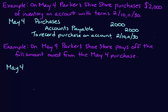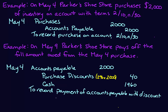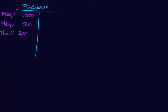When we pay off the purchase on May 9th, we assess whether we're within the 10-day discount period — and yes, we are, so we can take advantage of the 2% discount. The journal entry starts by completely canceling out the accounts payable. Then we calculate the discount, which goes to an account called Purchase Discounts — 2% of the $2,000 balance equals $40. Cash paid is the difference between accounts payable and the discount. In our T-accounts, we add the $2,000 May 4th purchase and show a new Purchase Discounts account with a $40 credit balance on May 9th.